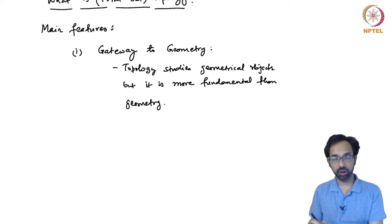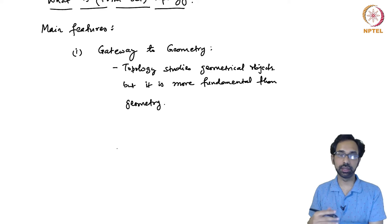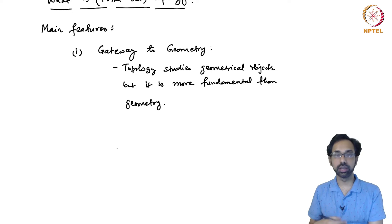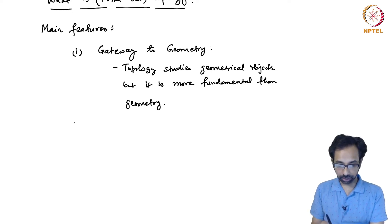Topology started as a study of usual geometrical objects like polygons, but eventually it became an abstract subject on its own. It is used to study the usual geometrical objects we are familiar with, but it also becomes a platform for studying geometrical objects. It is also different from geometry.